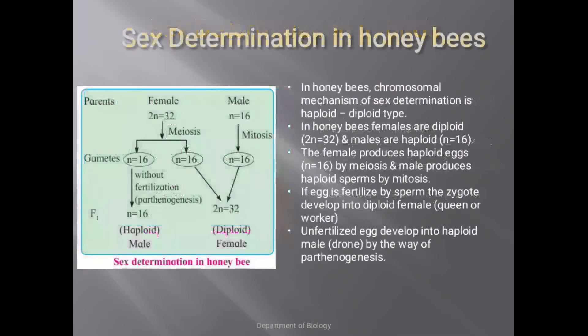Next is sex determination in honeybees, which is the haploid-diploid type. In honeybees, females are diploid and contain two sets of chromosomes, whereas males are haploid and contain a single set of chromosomes — 32 and 16 chromosomes respectively.